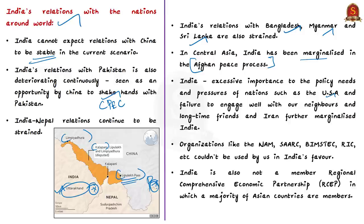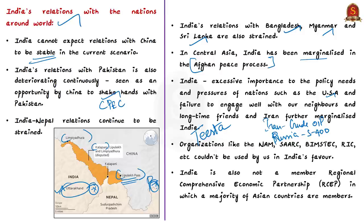India was buying crude oil from Iran and was supposed to buy S-400 Triumph from Russia, but we put all these plans on hold keeping the United States in mind. The author also feels we do not properly engage with neighbors such as Bangladesh — the problem being the Teesta water sharing agreement — and we do not engage properly with long-time friends such as Vietnam and Iran. Today, India-Iran relations lack enthusiasm. The author feels this has resulted in India's isolation from the world.